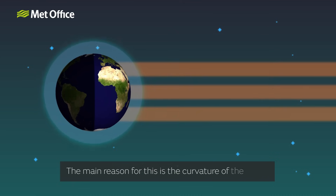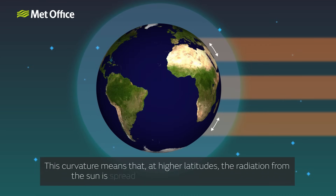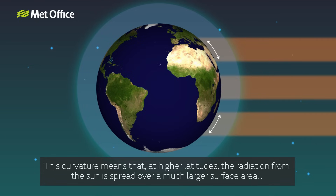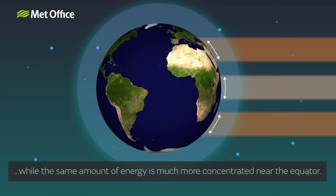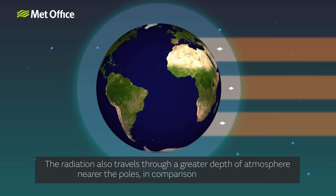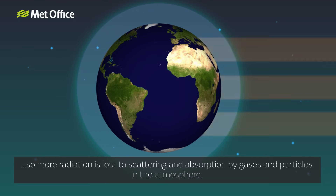The main reason for this is the curvature of the Earth. This curvature means that at higher latitudes the radiation from the Sun is spread over a much larger surface area, while the same amount of energy is much more concentrated near the equator. The radiation also travels through a greater depth of atmosphere nearer the poles in comparison to the equator, so more radiation is lost to scattering and absorption by gases and particles in the atmosphere.